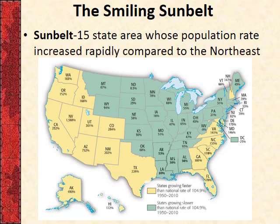Looking at where people moved: the east coast first, then the Ohio River Valley in the early 1800s, the gold rush to California, then the Great Migration where tons of African Americans moved from the South to cities like Chicago, Pittsburgh, St. Louis, and Detroit. In the aftermath of World War II, the South and Southwest see the highest increases in population, largely because military factories and jobs were built there.